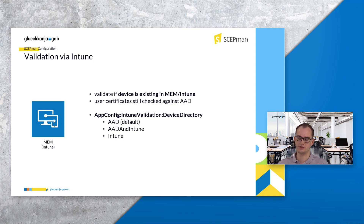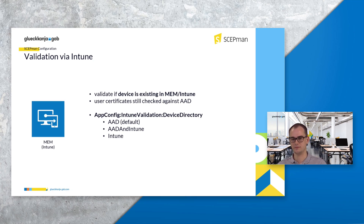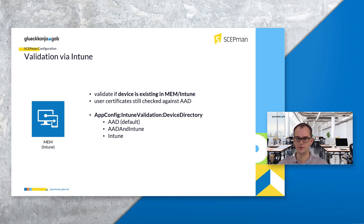So how do you set this up? We now offer a new app setting. You will find it described in our docs. The setting is called 'AppConfig Intune Validation Device Directory' and it has three options. The first option is Azure AD only — this is the default value, so if you don't change it, behavior stays the same as before. You can also switch to Intune only, so SCAPMAN only asks Intune if the device exists there. The third option is Azure AD and Intune — SCAPMAN queries both directories in parallel, and if either directory confirms the device exists, the certificate will be valid.